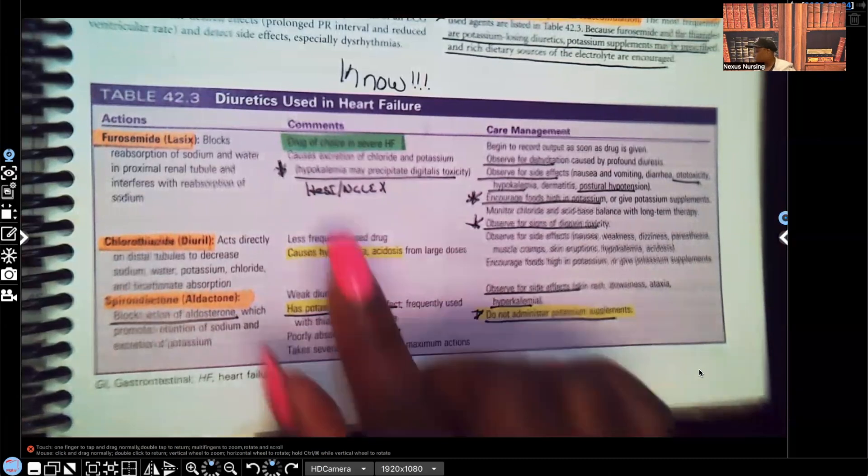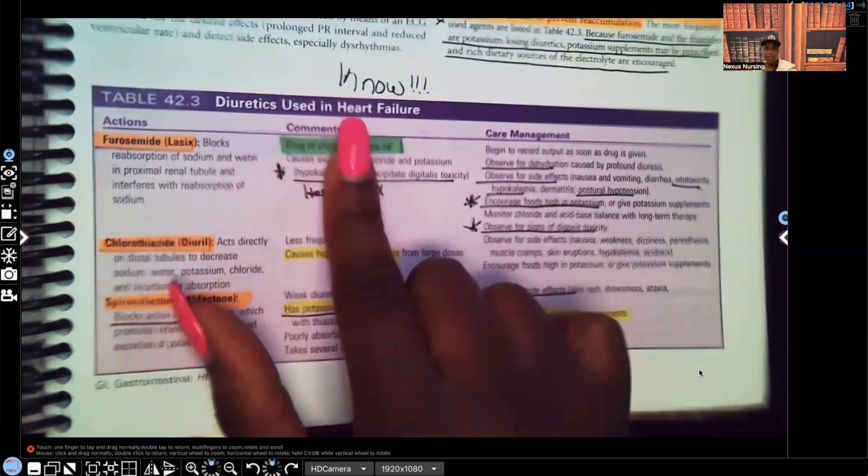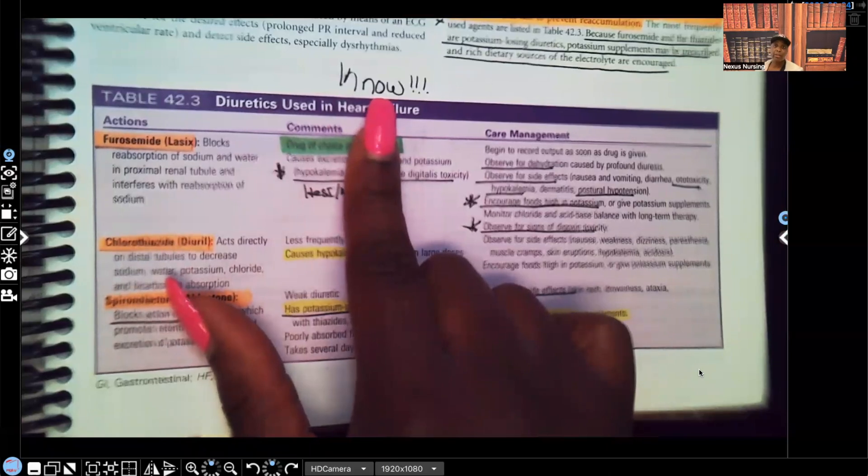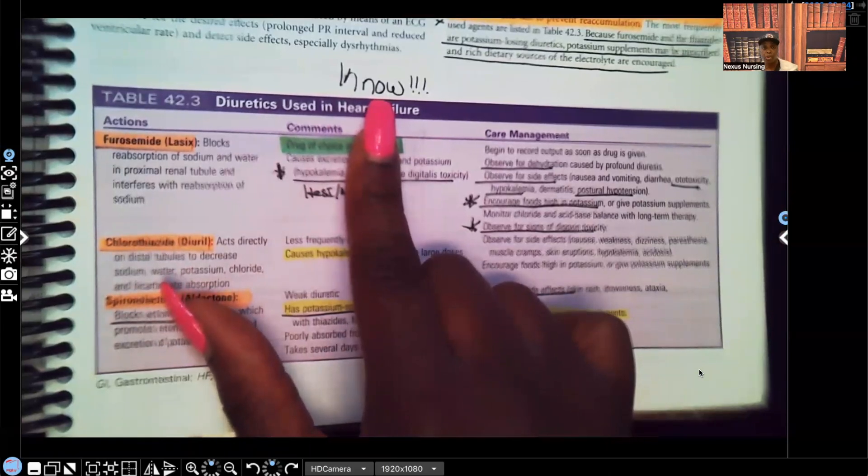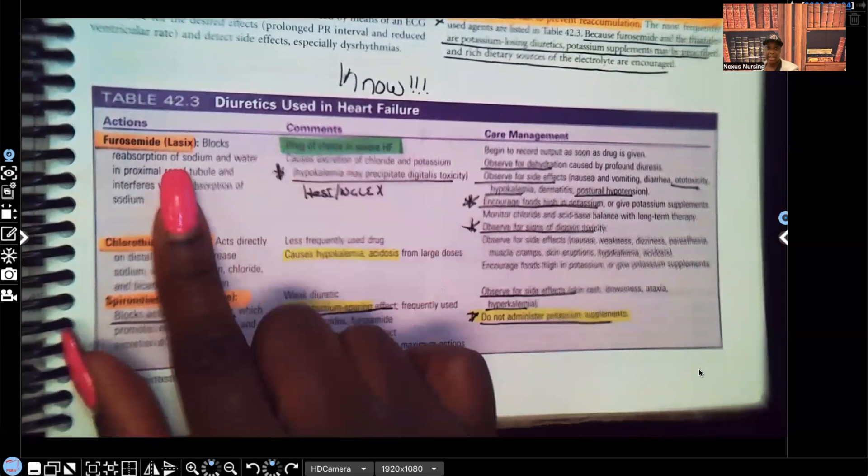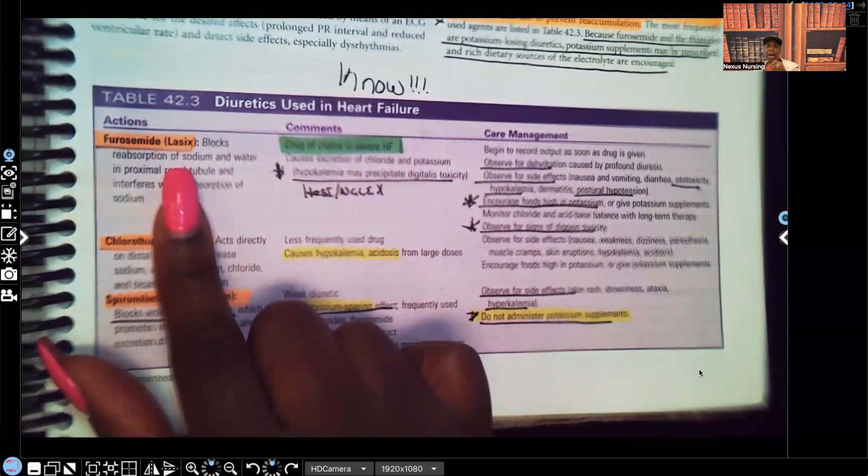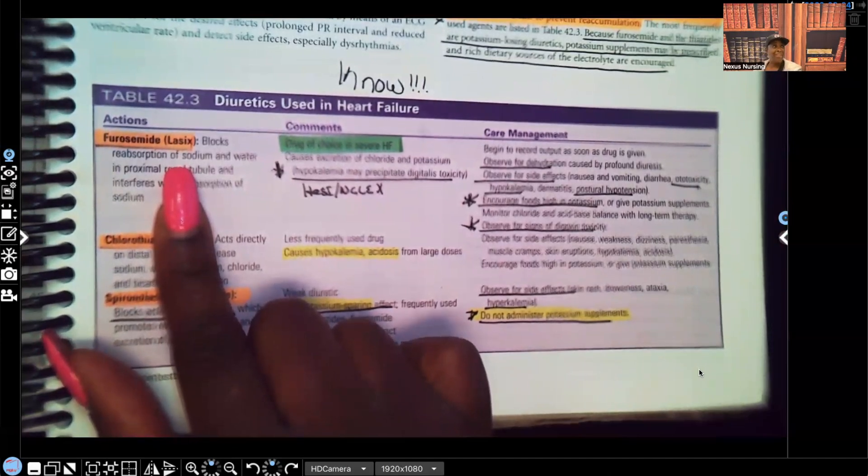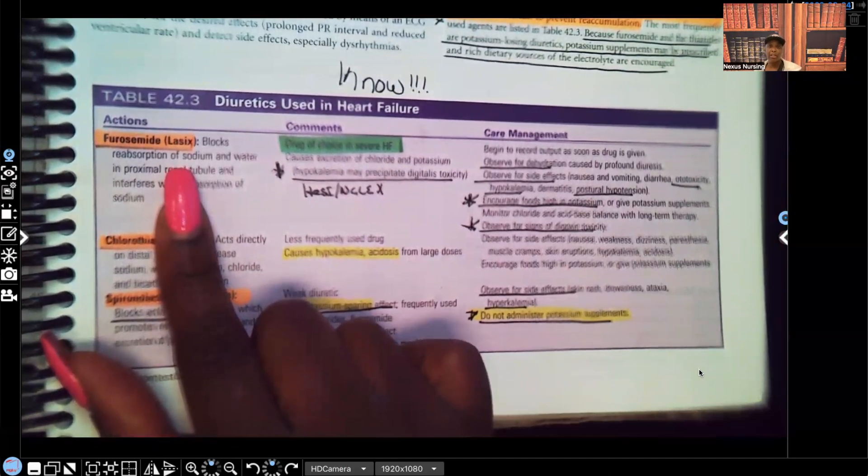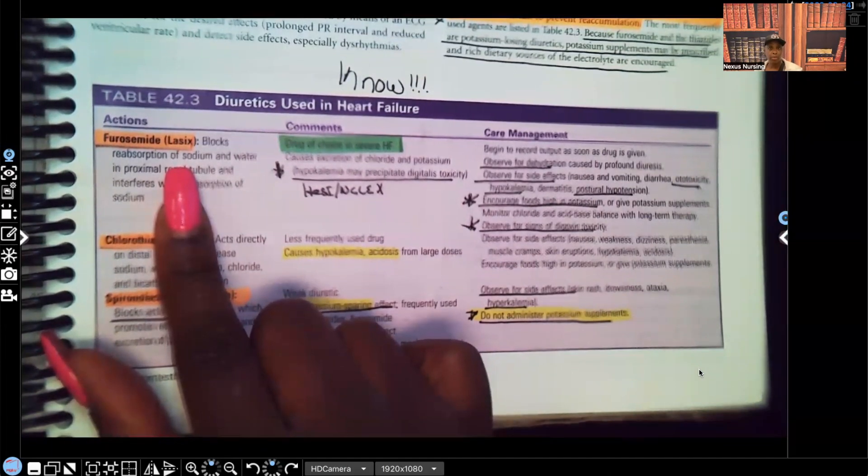Alright guys, let's get started. Take a look at what it says. This is diuretics used in heart failure. I put three exclamation marks next to the no, that means this is super important for you guys to know. Let's look at Lasix. Lasix makes you lose potassium, so this is a diuretic that will possibly drop your potassium.